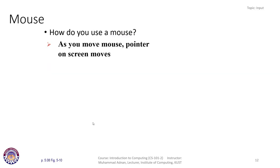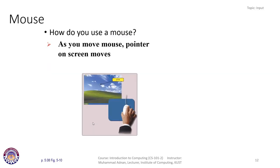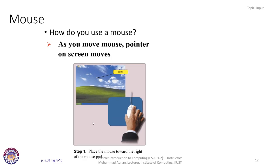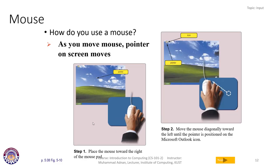As you move the mouse, the pointer on the screen moves accordingly. For example, you can place the mouse on the mouse pad, move it diagonally, and position the pointer on the Microsoft Outlook icon. With just the movement of the mouse, you can point to a particular application program, double-click it, and that program gets executed. It is very easy to work with the computer using the mouse.